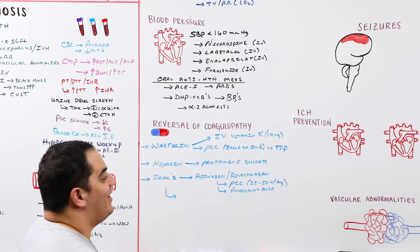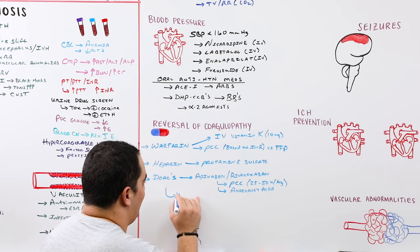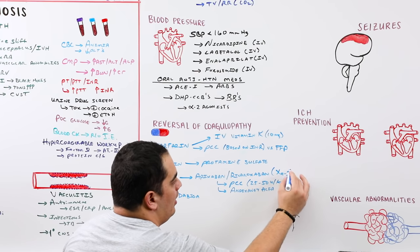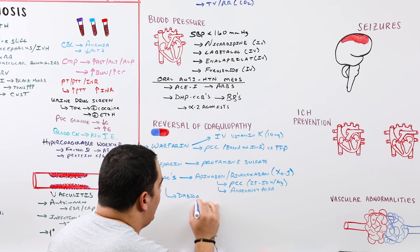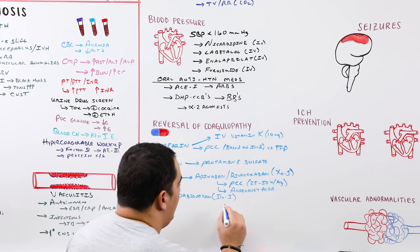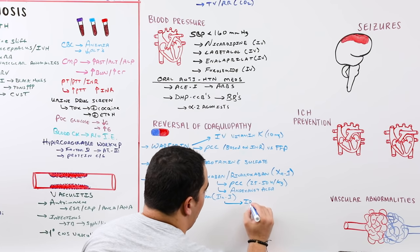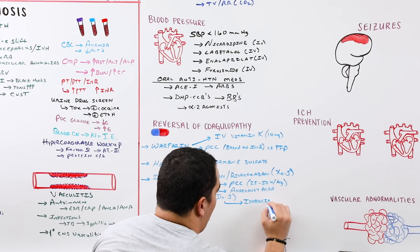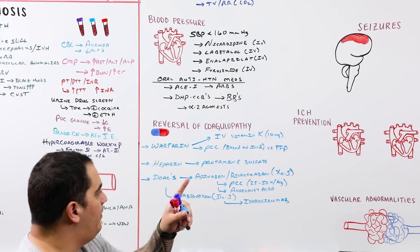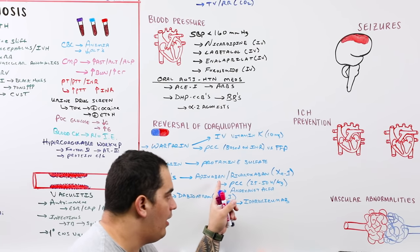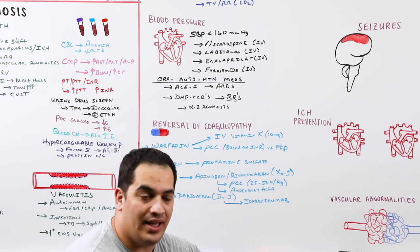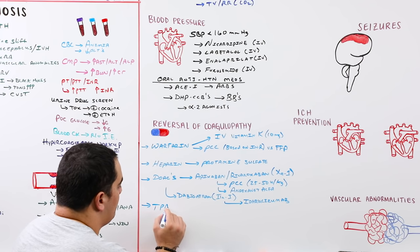Dabigatran, a factor IIa (thrombin) inhibitor, is reversed with the specific monoclonal antibody idarucizumab. To summarize: warfarin → IV vitamin K + PCC or FFP; heparin → protamine sulfate; factor Xa inhibitors (apixaban, rivaroxaban) → PCC or andexanet alfa; dabigatran → idarucizumab.